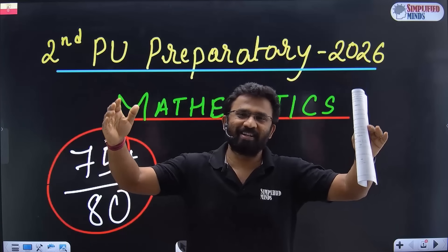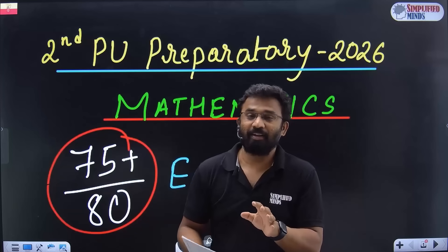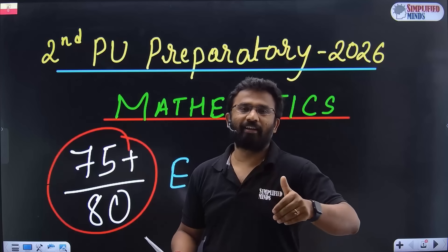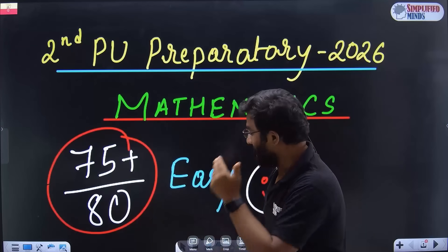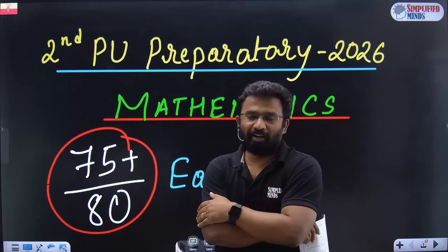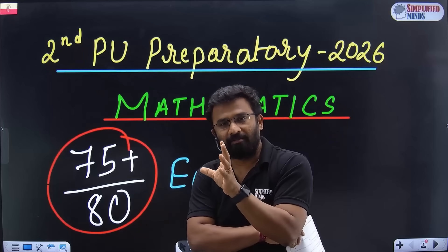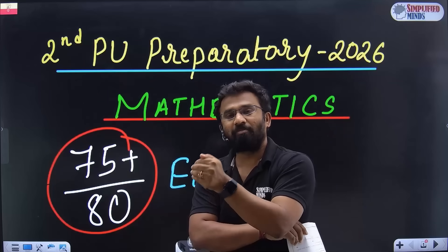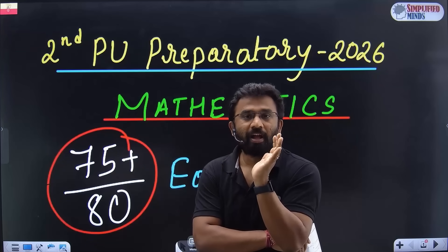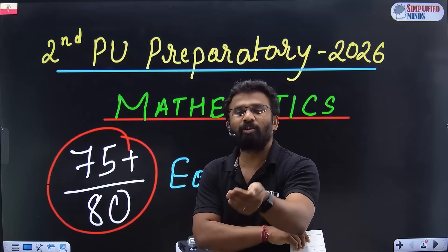Hello, welcome to Simplified Minds. You can easily score 60 plus or 75 plus in math. But let me tell you one thing - it's easy for those who give proper time management. You can allocate time out of your day, and even if you're starting to study 10 to 12 hours, you can easily score.